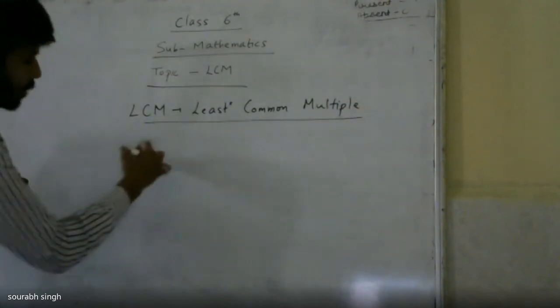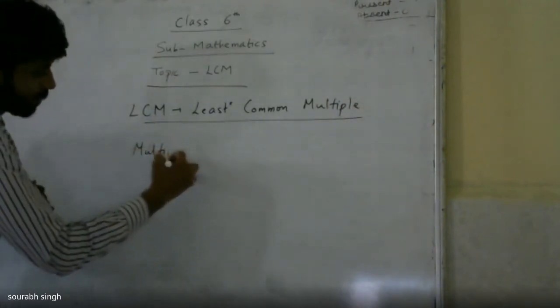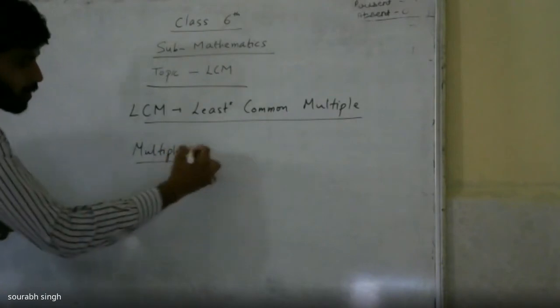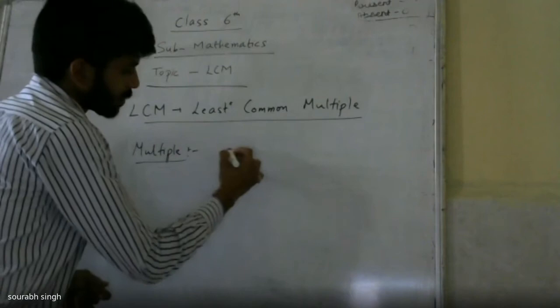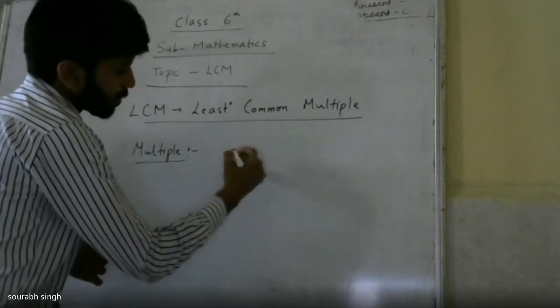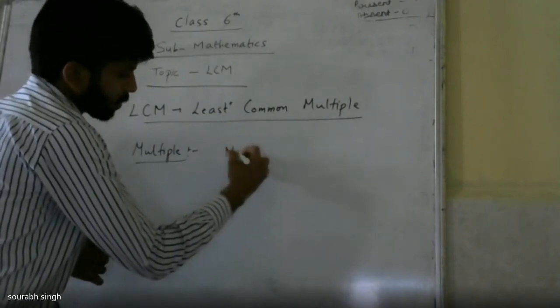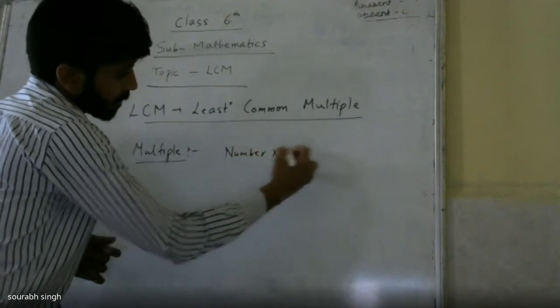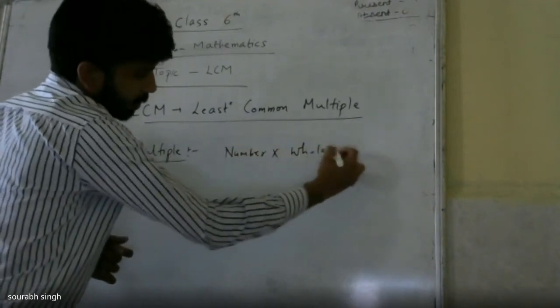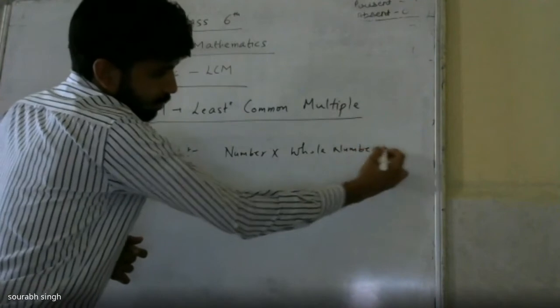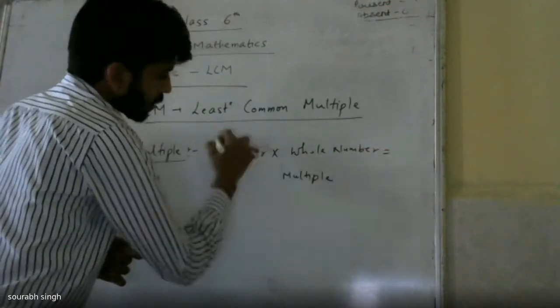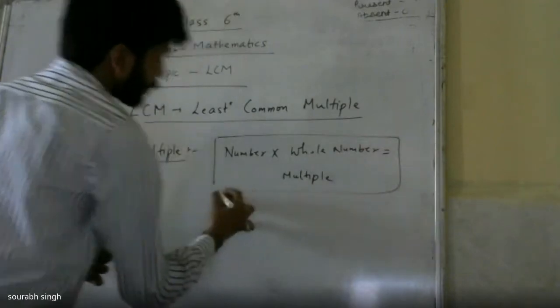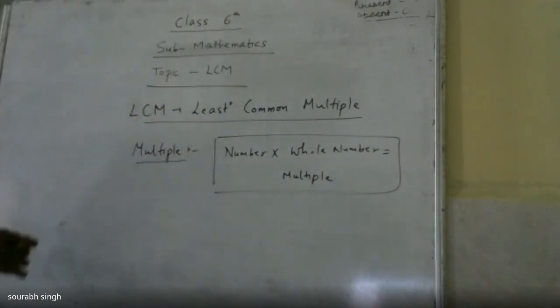You all know about what is multiple. Multiples are those numbers which come into the table of any number, or you can say that when a number is multiplied by any whole number, you get a multiple. Clear?